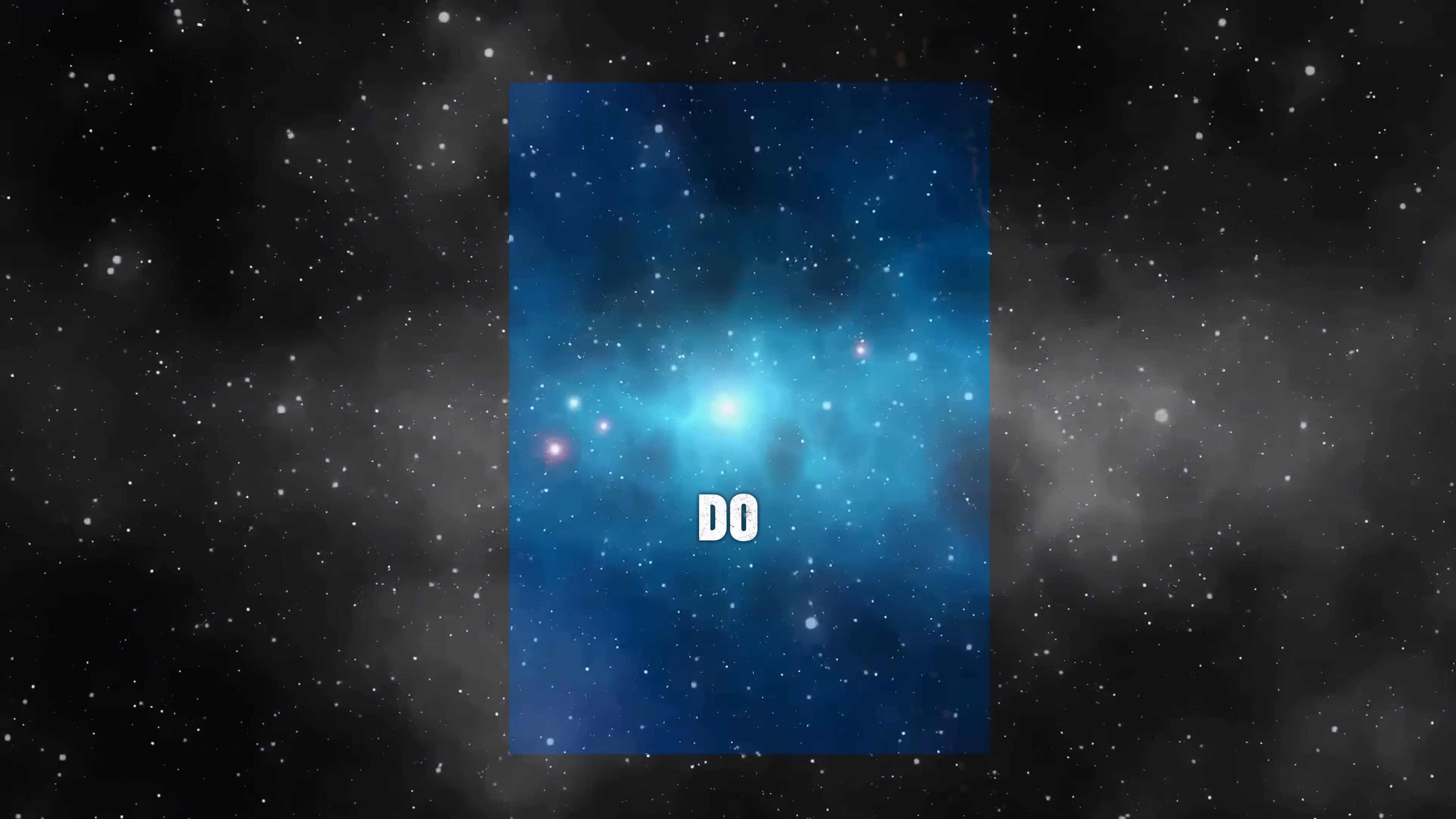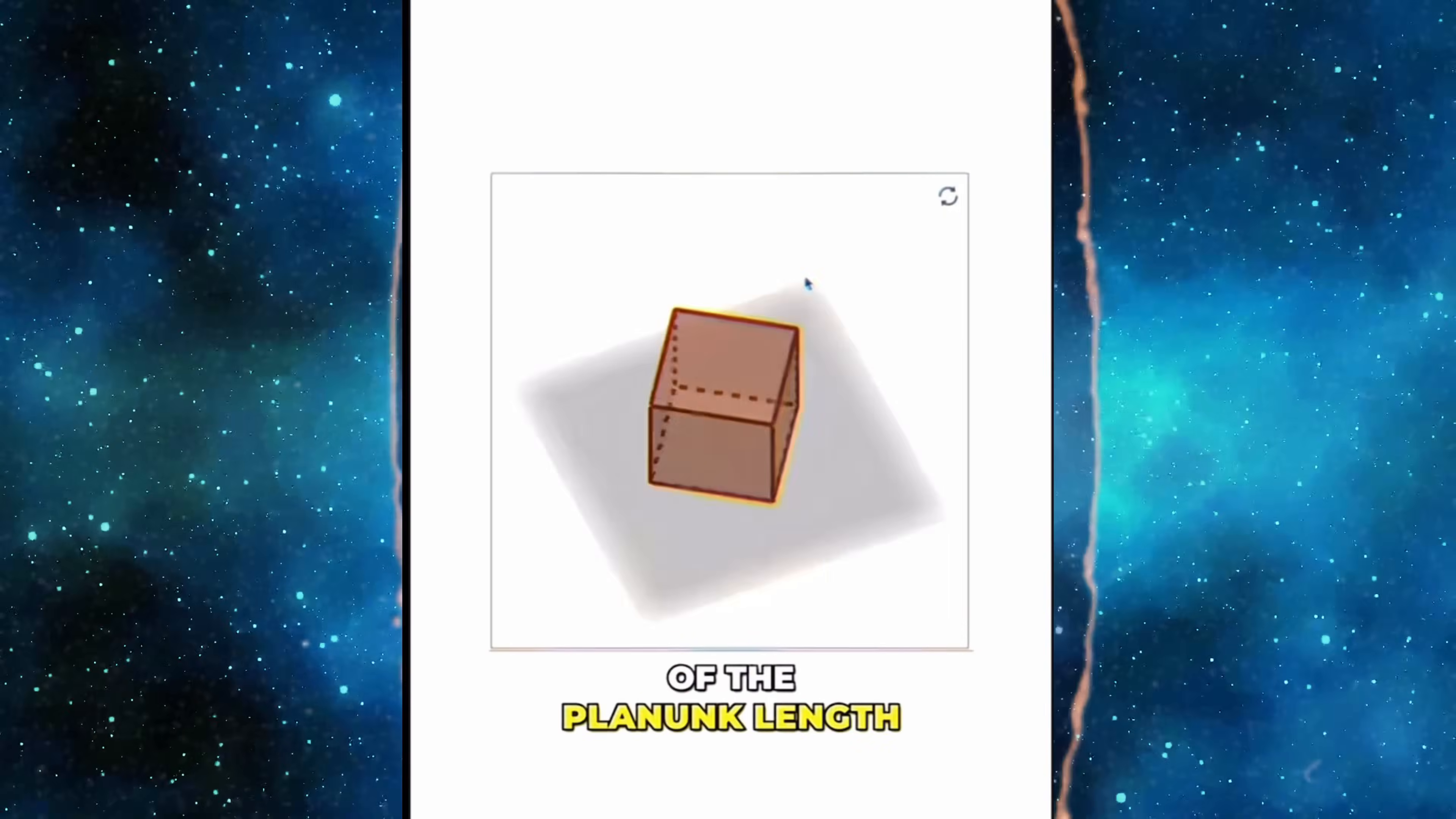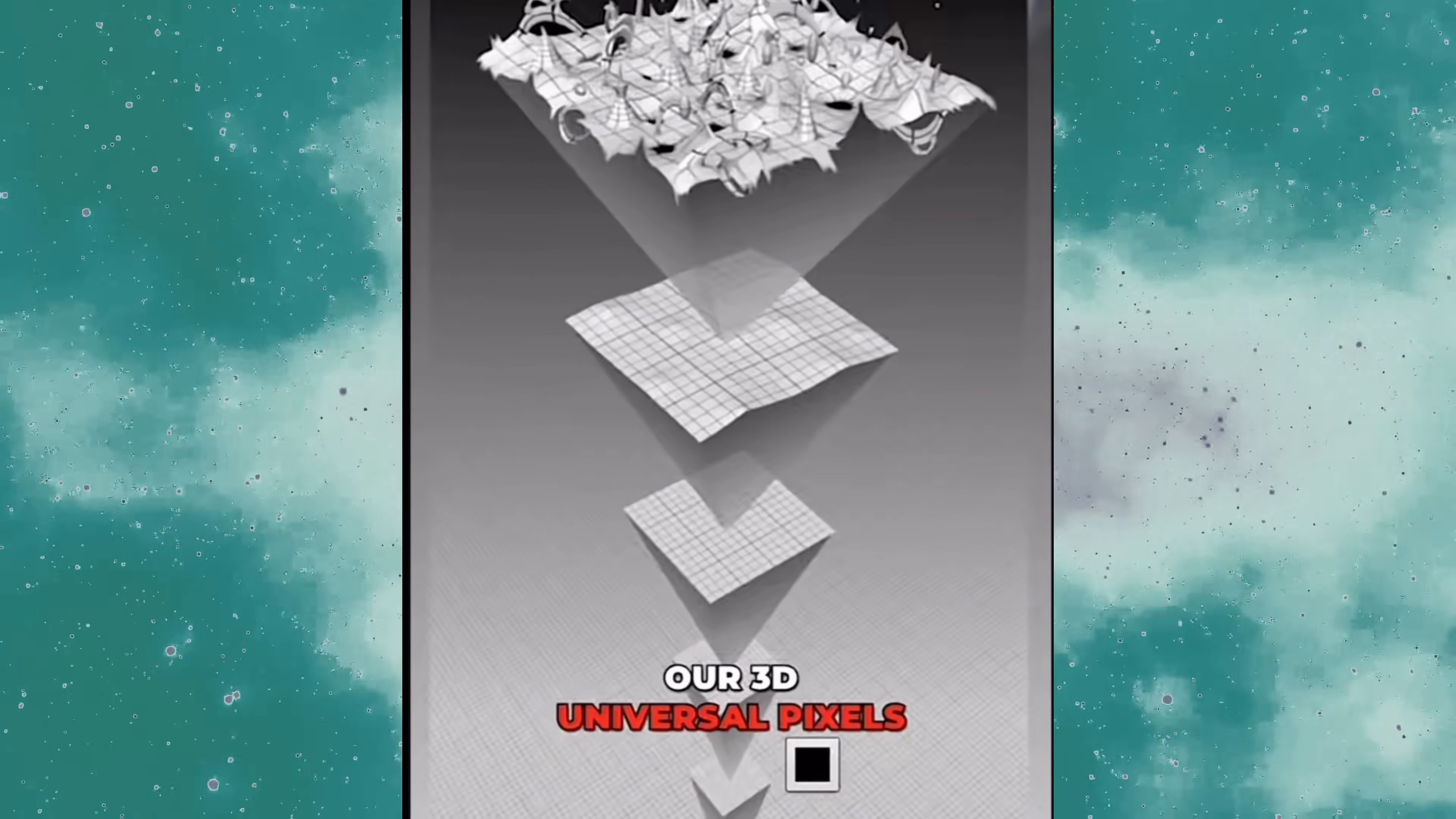So, all we need to do is define a cube with the side lengths of the Planck length, and we have our 3D universal pixel. Crazy, right?